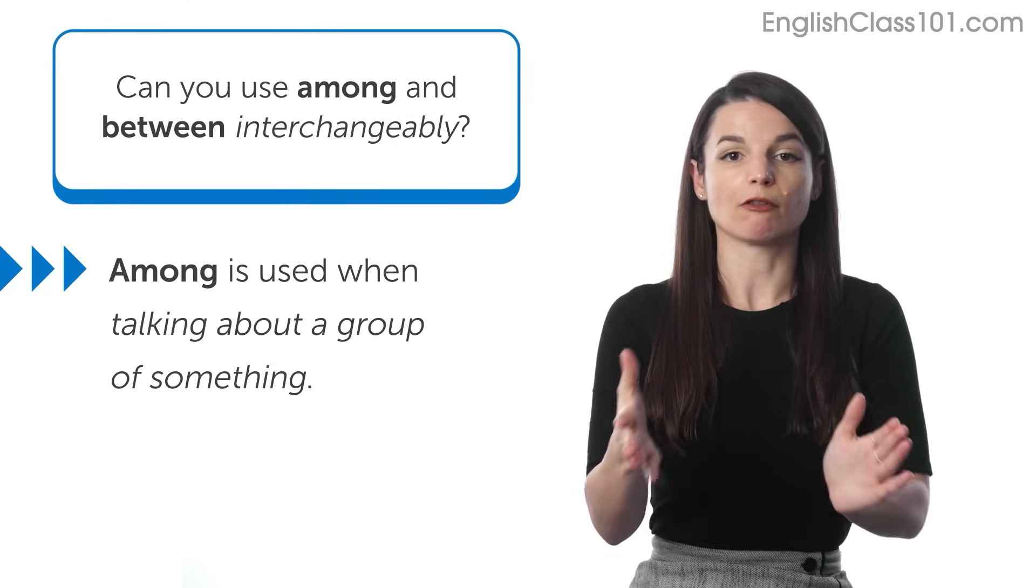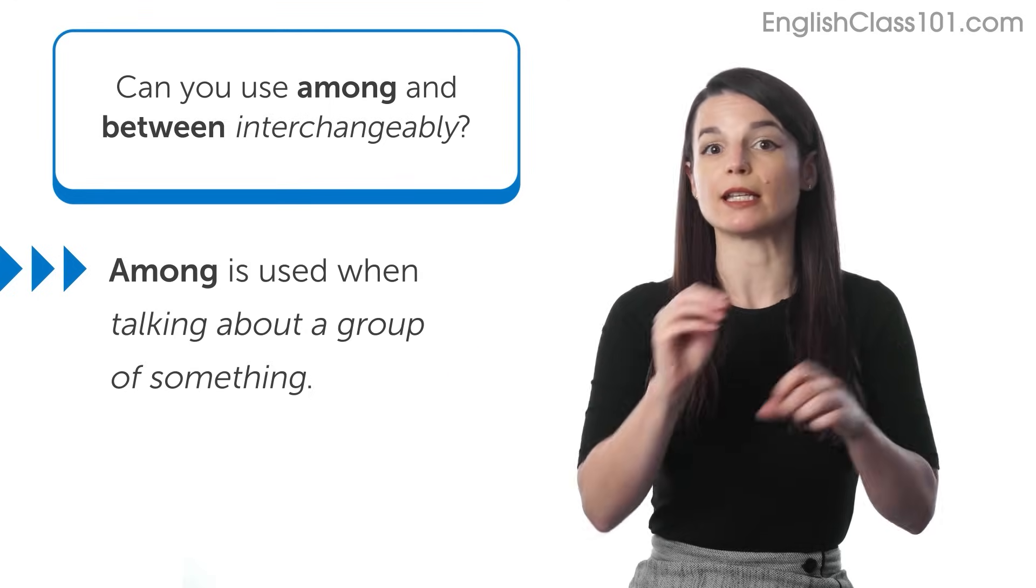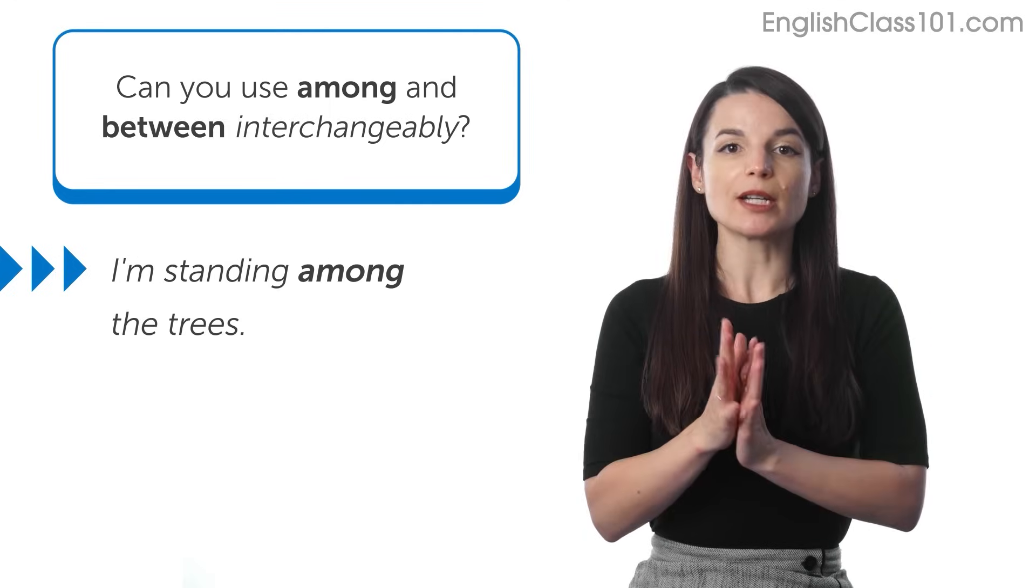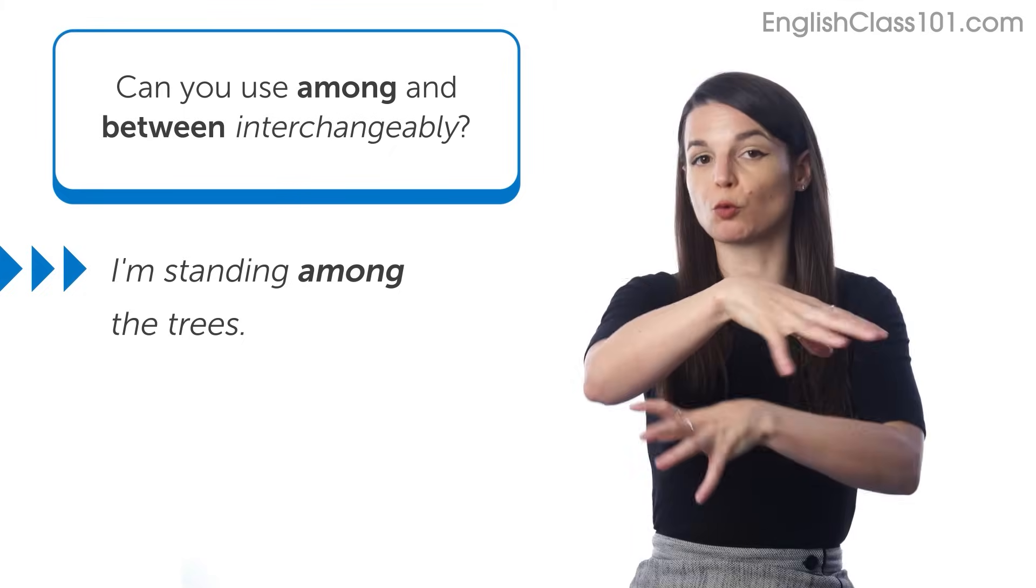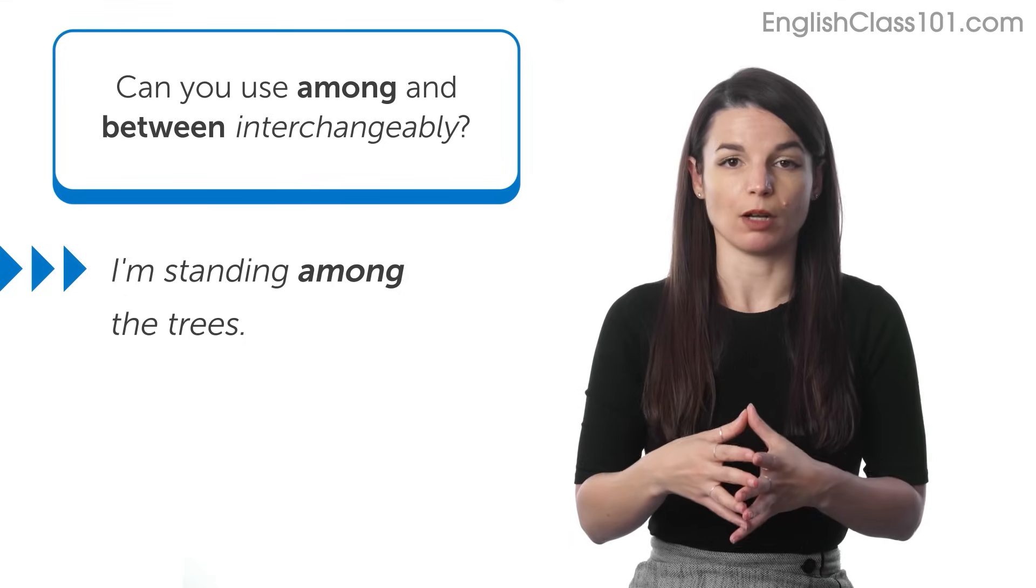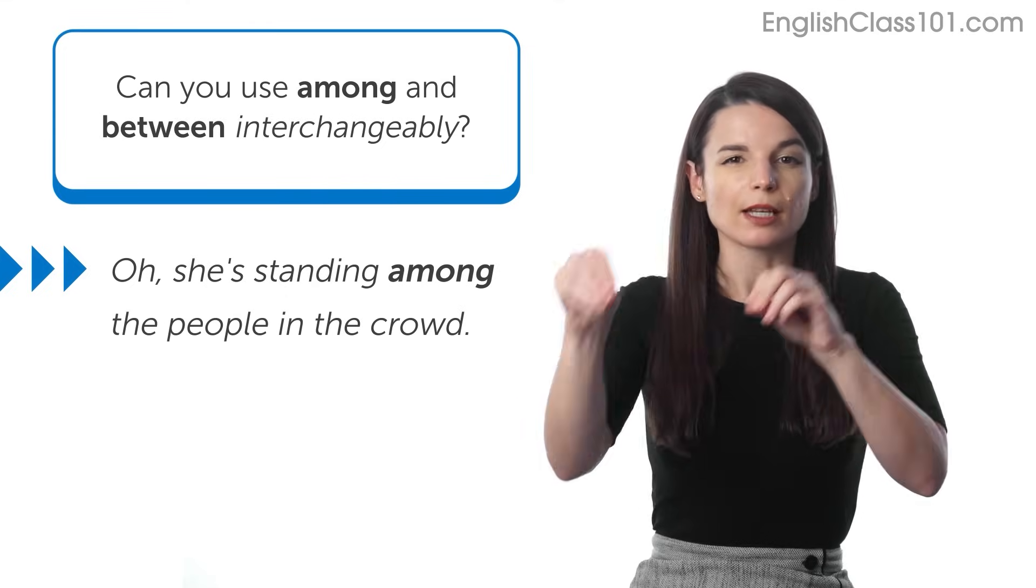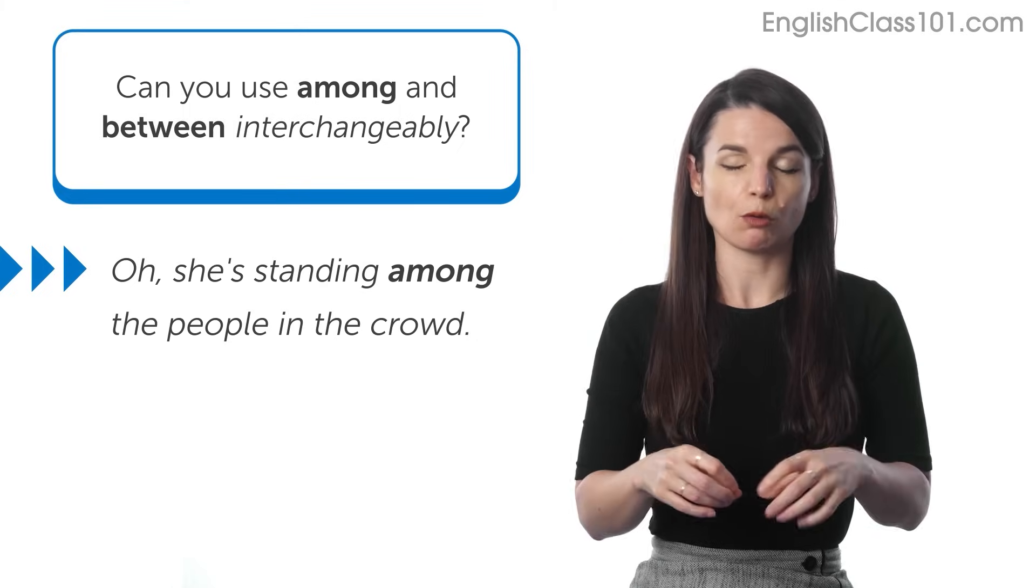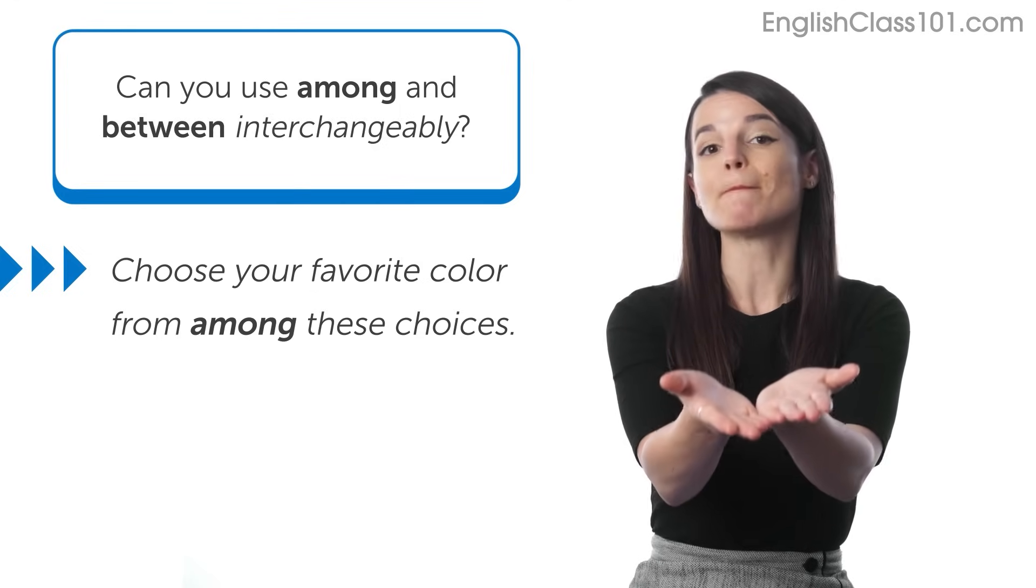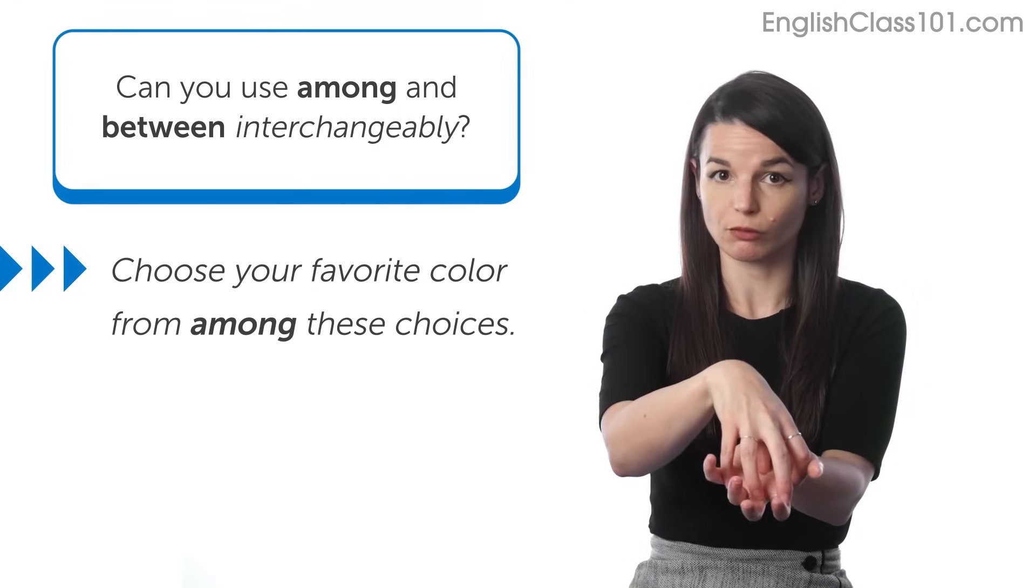So among is used when we're talking about a group of something. So for example, let's say you're in the forest and you are standing in the middle of the forest. There are lots of trees around you, right? You could say, I am standing among the trees, right? So that means you're kind of inside a group of something, right? You might also say this when you're in a group of people as well, like, oh, she's standing among the people in the crowd. So this sounds like you're surrounded by something. Or when you have like a lot of things to choose from, you might say like, choose your favorite color from among these choices, which sounds like there are many different options for you.